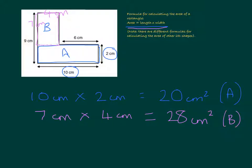And now we need to add together our two sections, 20 and 28, which gives us a total area of 48 cm².